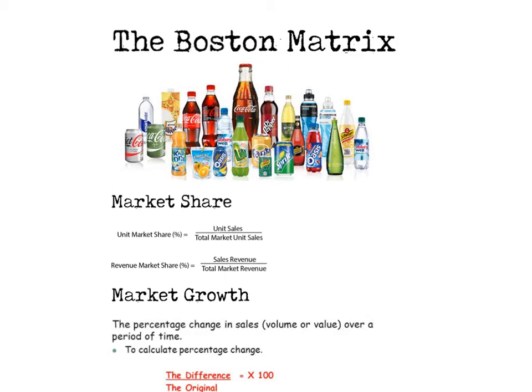This video is based on the Boston Matrix, which is a marketing theory. What it looks at is the relationship between products in a product portfolio. A product portfolio is the range of products that belong to a firm. If you think about brands such as Coca-Cola, the Coca-Cola company itself has lots and lots of different products in its portfolio.